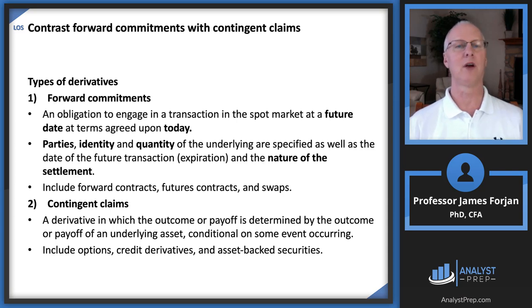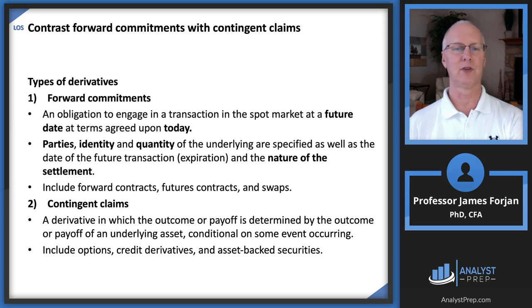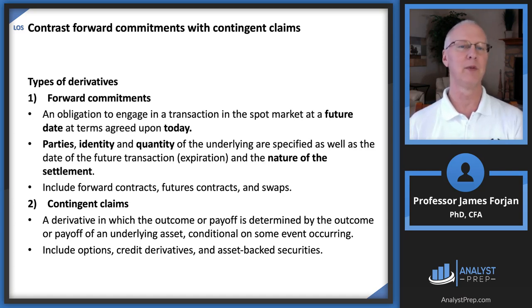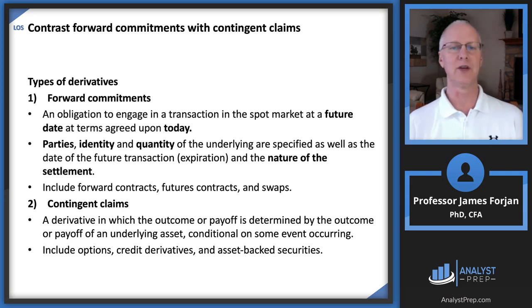If that share of stock increases to $200 or $300 by the time the option expires and you have the right to buy it at $100, that's a positive contingent claim. But if the price falls to $10 or $20, why would you pay $100 for something you can get in a different market for $20?